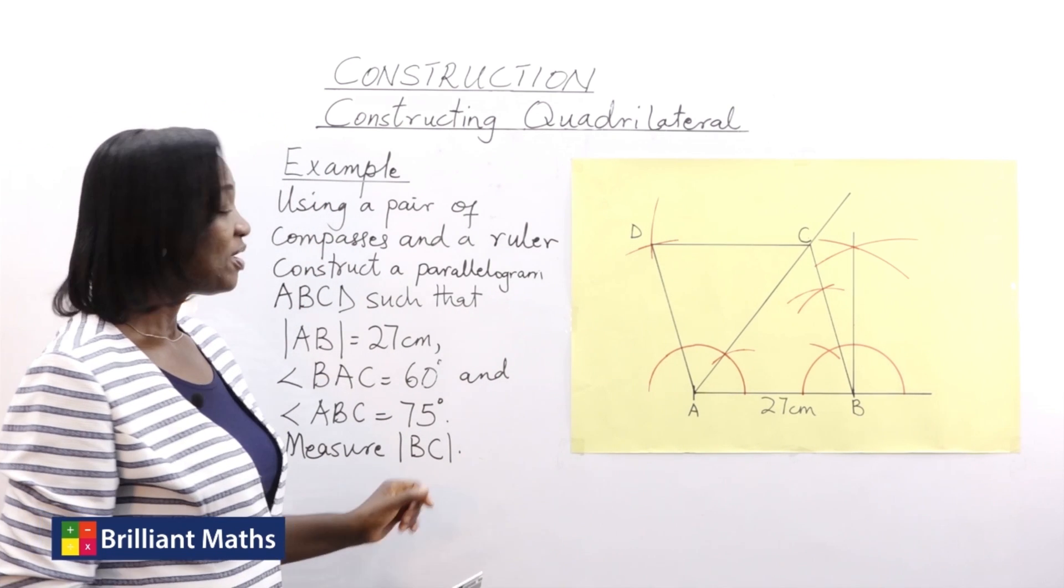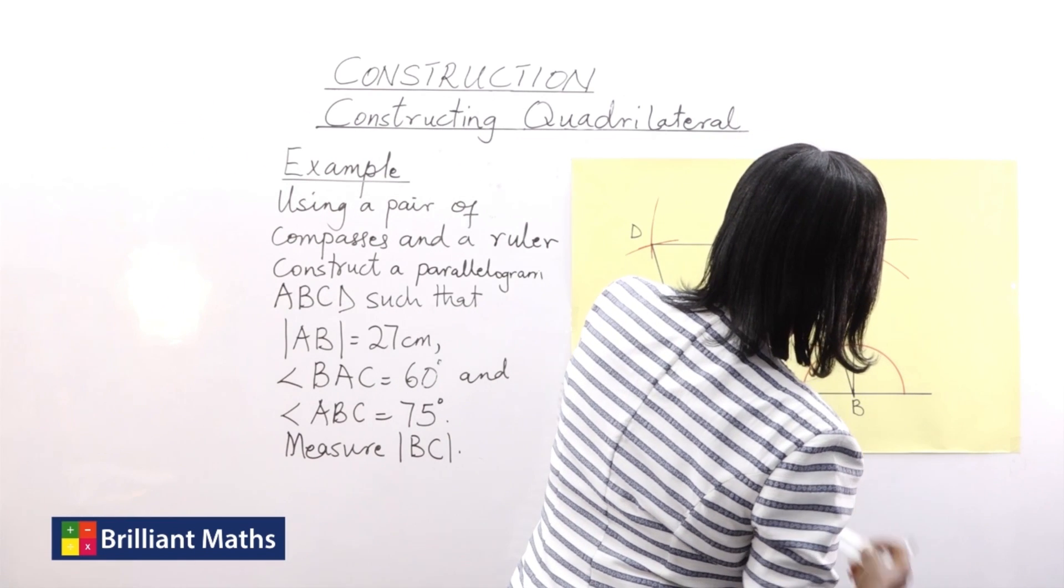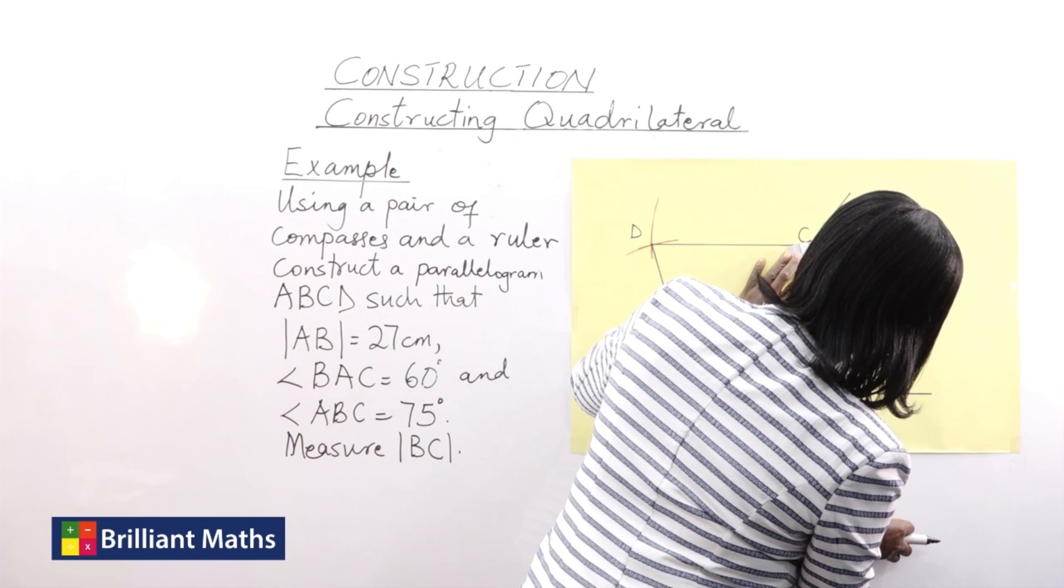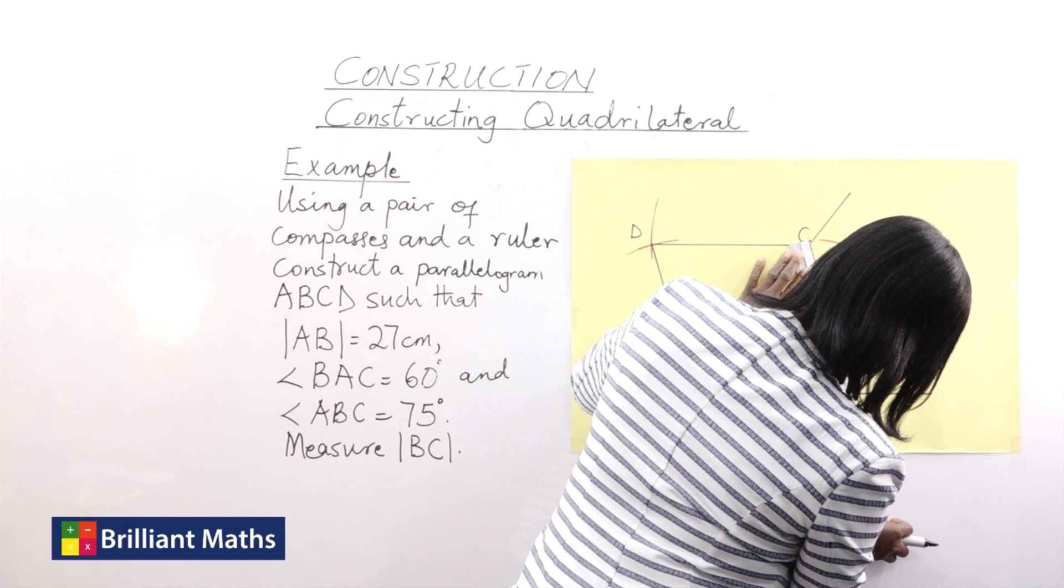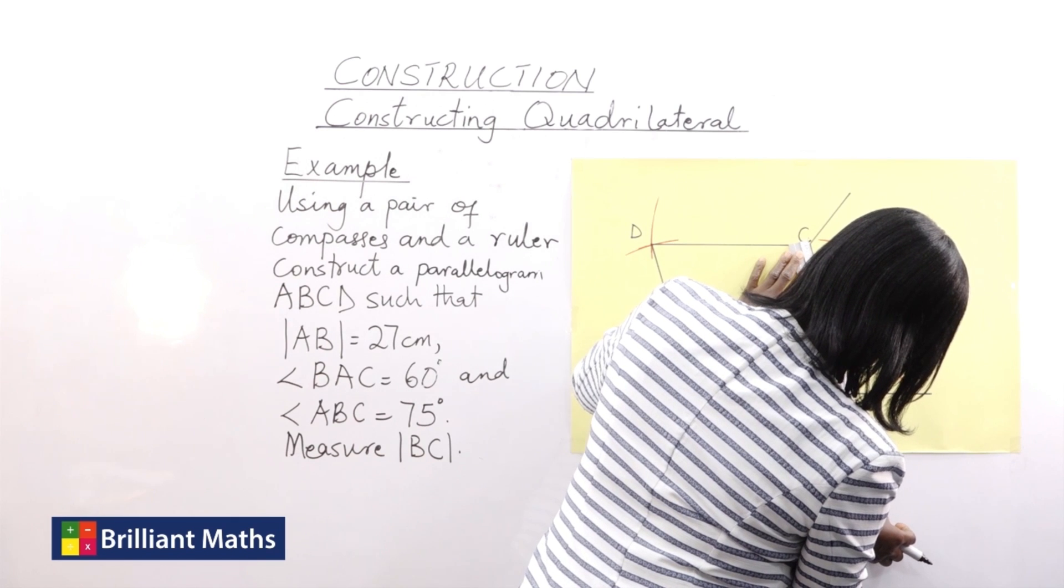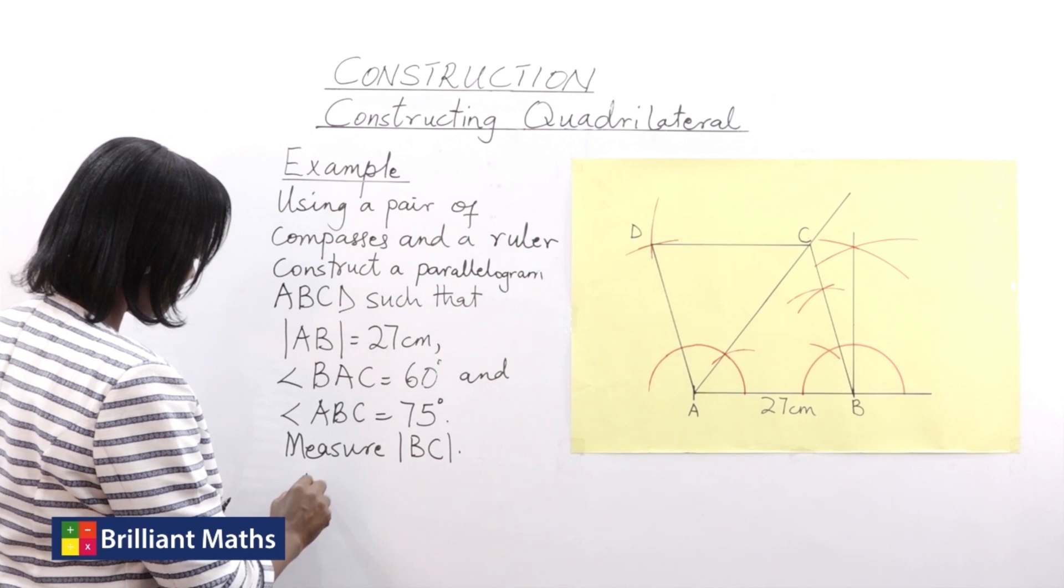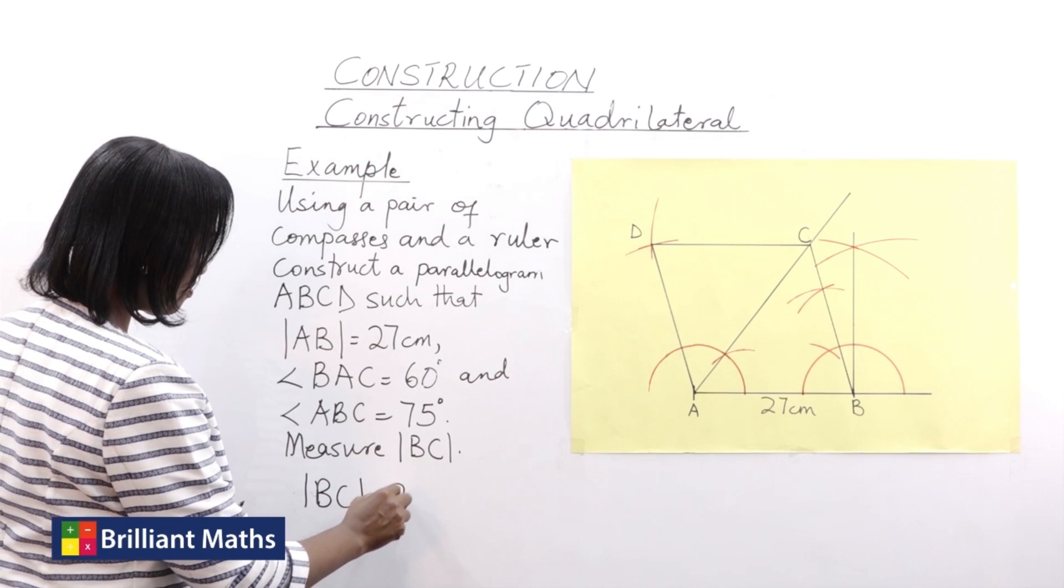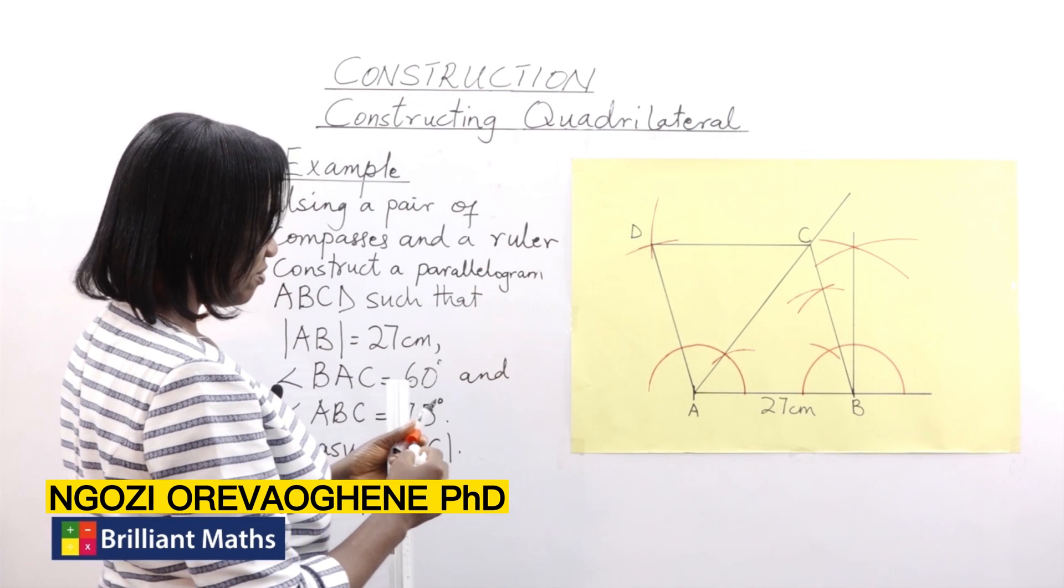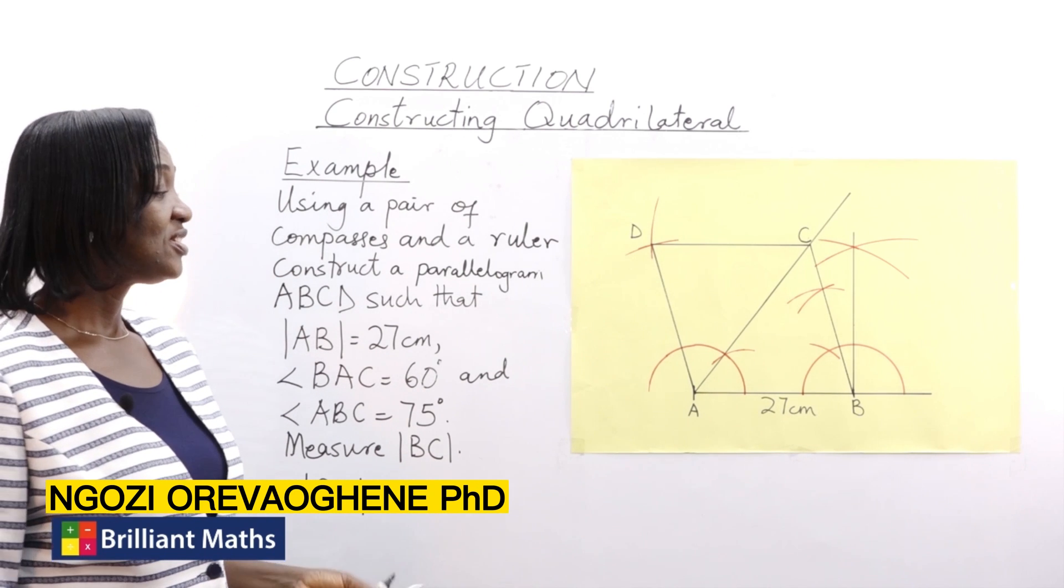The final question is measure line BC. And line BC from my construction is equal to 27 centimeters.